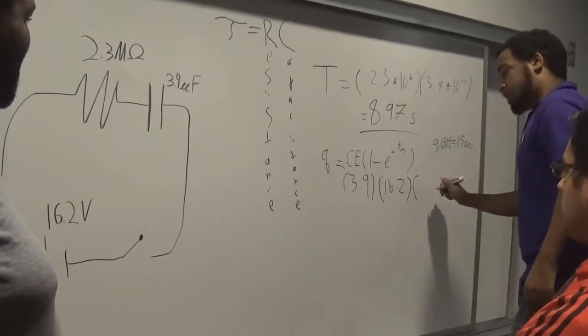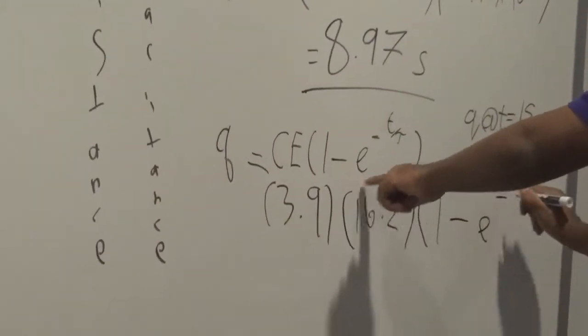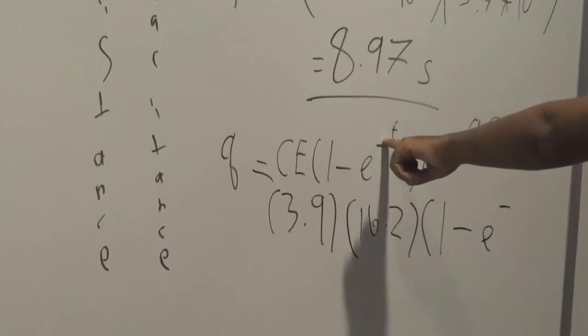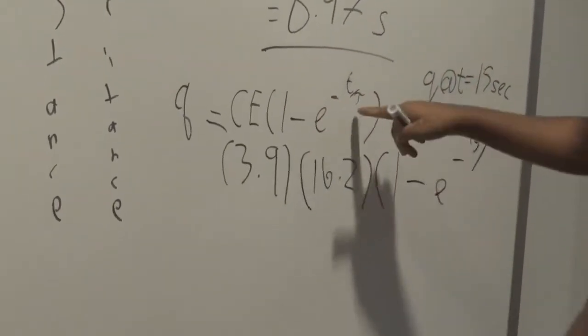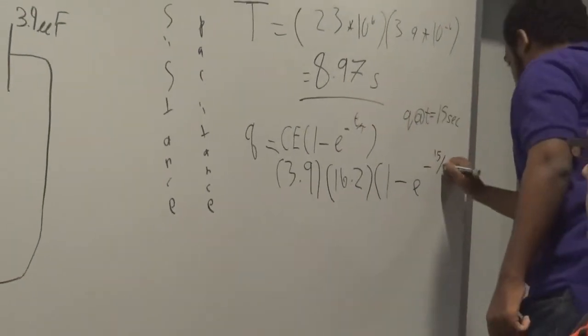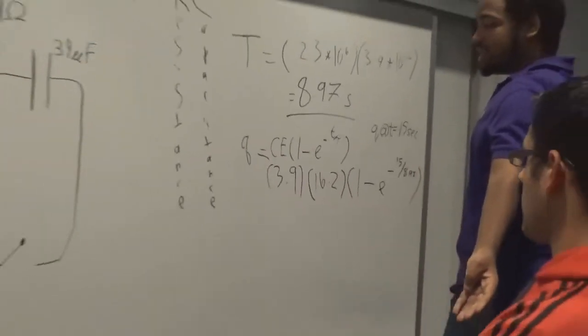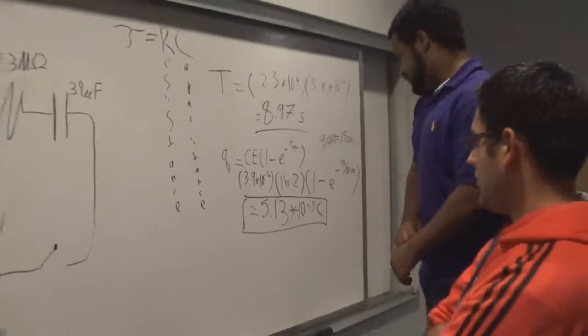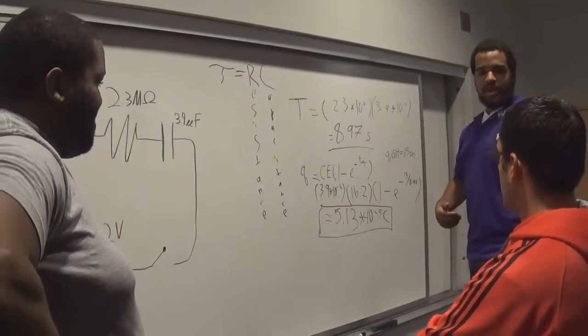And then we are going to subtract the 1 minus E to the T time, which we said would be 15 seconds, over the newly found time constant, which would be 8.9. And then it is complete. All we need to do is solve. BAM! I have made the answer appear magically. And that is how you find the charge.